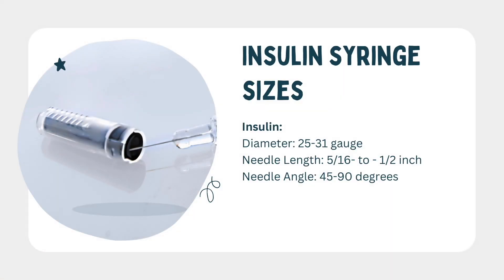Using the correct insulin syringe keeps the patient safe and helps prevent any sort of medication errors that might occur from this medication. We need to use a syringe that has a diameter of 25 to 31 gauge, which essentially means that's how round it is. It actually goes in reverse order, so an 18 gauge is actually going to be a larger needle than a 31.